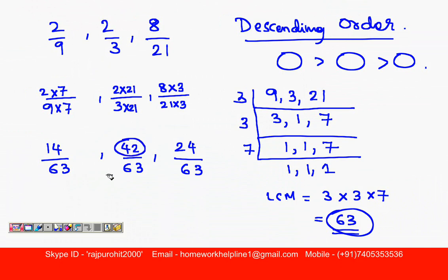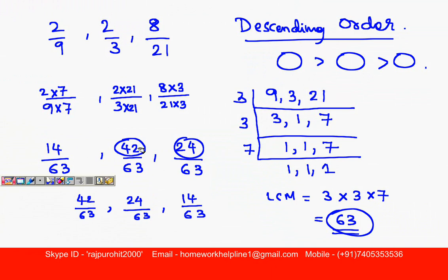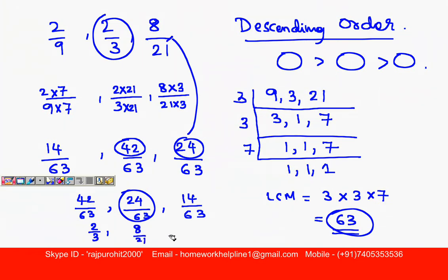Now which is the biggest here? 42 is the biggest, so write 42 upon 63 first. Smaller than that is 24, so 24 upon 63, and the last number is 14 upon 63. Now 42 upon 63 came from 2 upon 3, so that is the biggest. 24 upon 63 came from 8 upon 21, and 14 upon 63 came from 2 upon 9. So the descending order is: 2 upon 3 greater than 8 upon 21 greater than 2 upon 9.